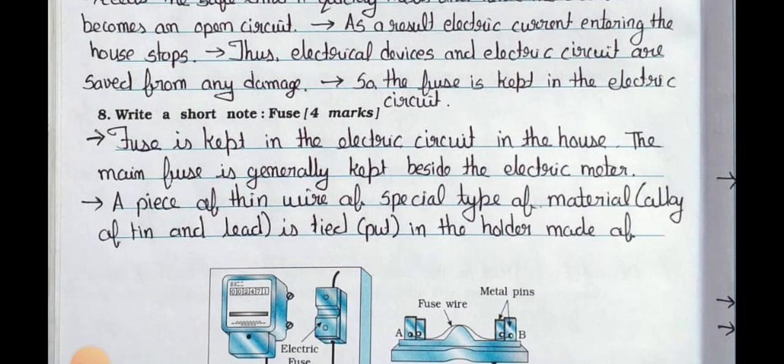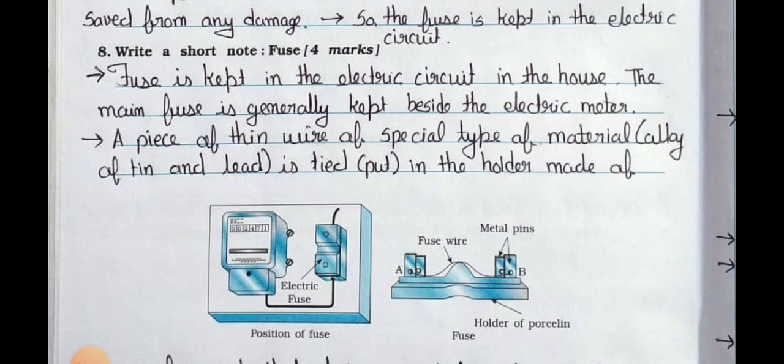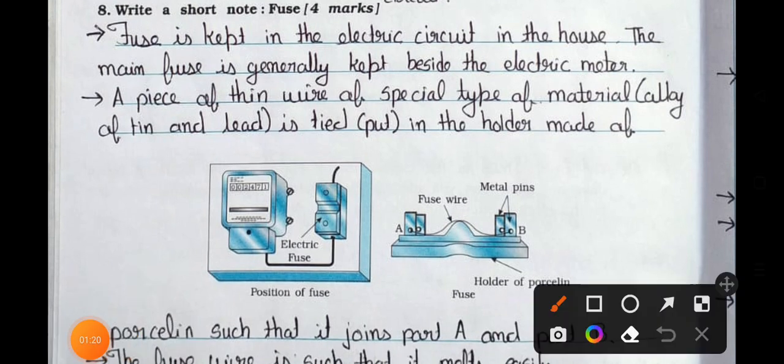Main 8: Write a short note on fuse, four marks. Answer is: First of all see the diagram of fuse. It's the electrical fuse, position of the fuse is there. Now see here, fused wire is there. Position A, position B, it's a metal pin here connected to metal pins, and here it's the holder of porcelain.